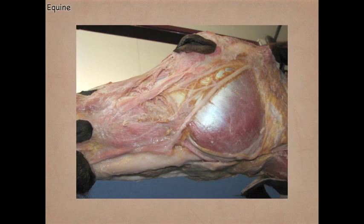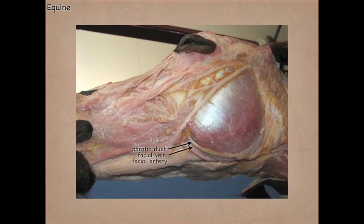Looking just under the masseter muscle, we can see the parotid duct from the parotid salivary gland. Then we have the facial vein and the facial artery, and you always find them in that order. The parotid duct does not cross the masseter muscle in either the horse or the ox, as we see it does in the dog.